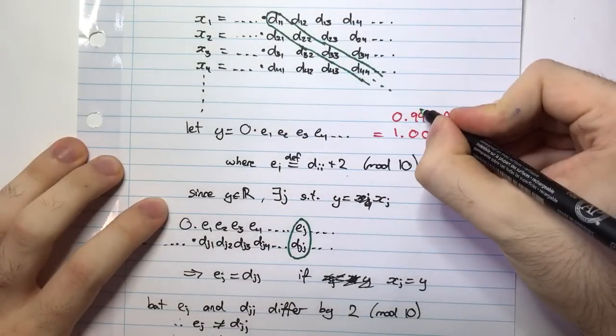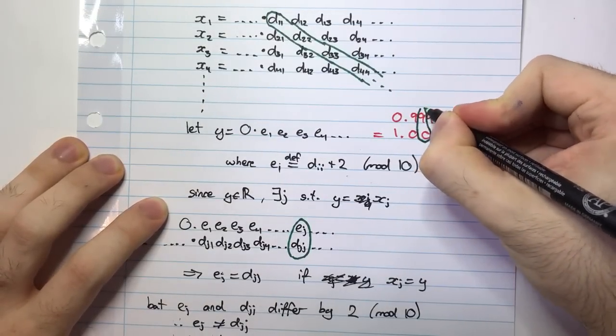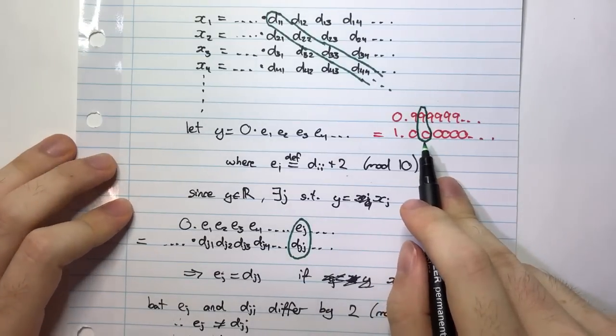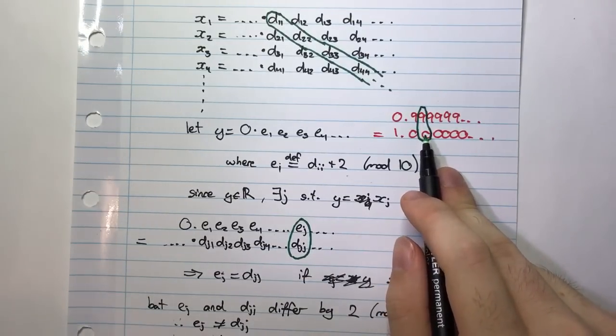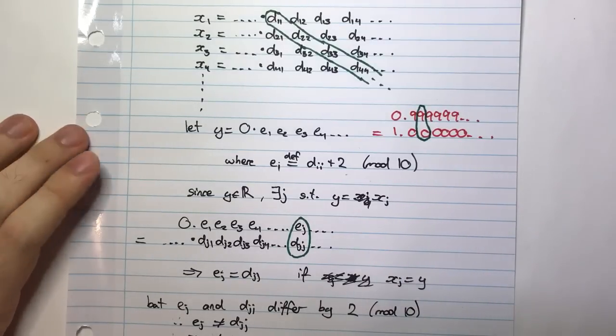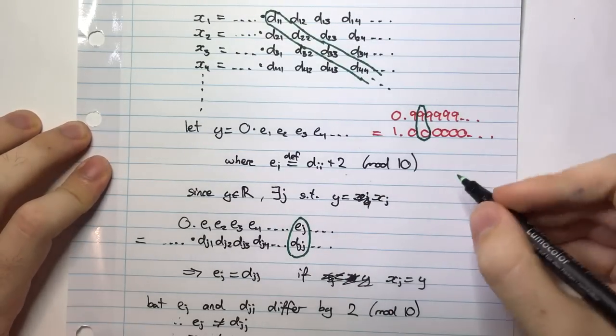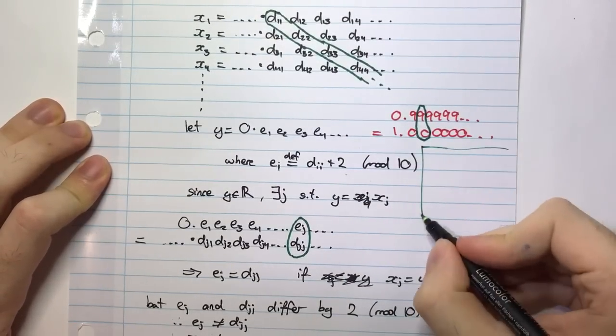It can be shown quite easily using geometric series. So if that's the case, well, let me look at a particular, let's just have a look here at the second one. So 0 and 9, they differ by 1 mod 10.